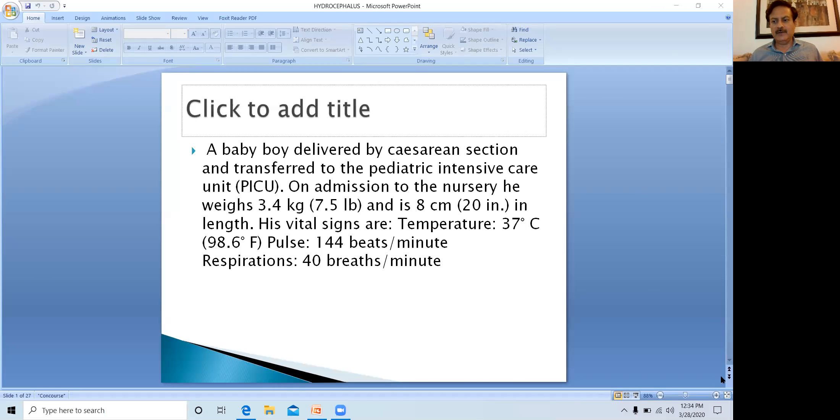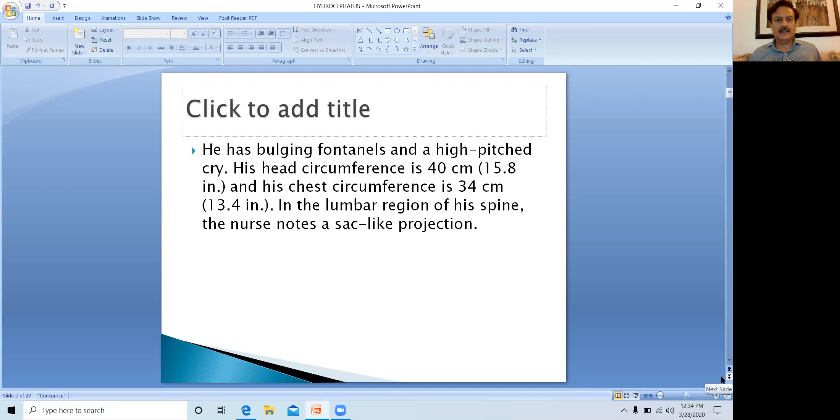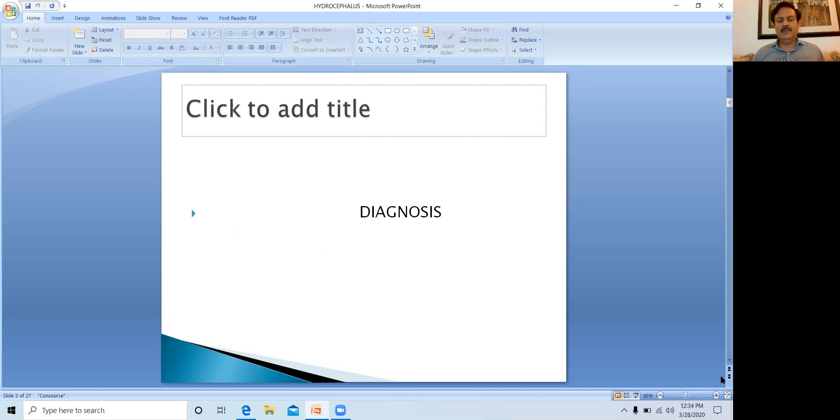This was a short scenario. After that, on examination of the baby boy, his fontanelles were bulging and he had a high-pitched cry. His head circumference was measured at 40 cm and his chest circumference was 34 cm. A sister on duty noticed there was a sac-like projection in the lumbar region of this patient. So with this short information, what was the clinical diagnosis? What could be the possibilities?